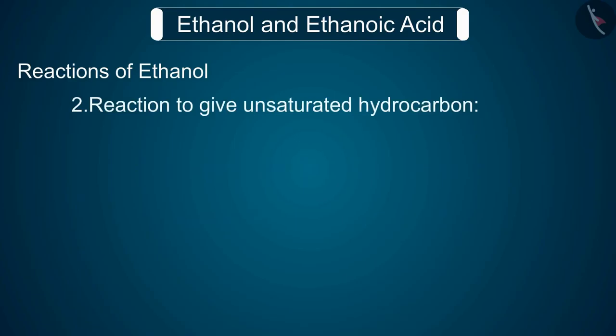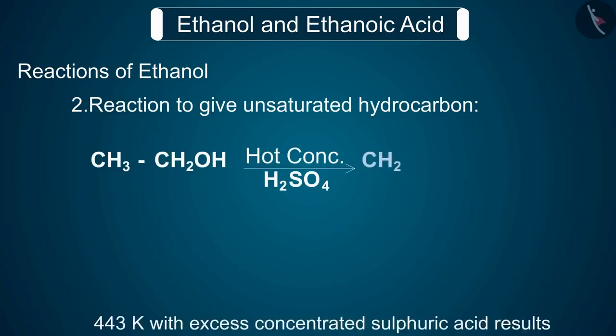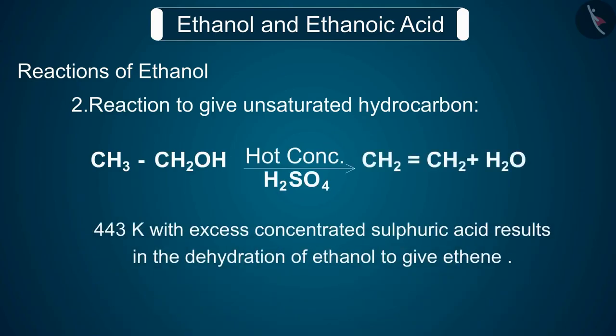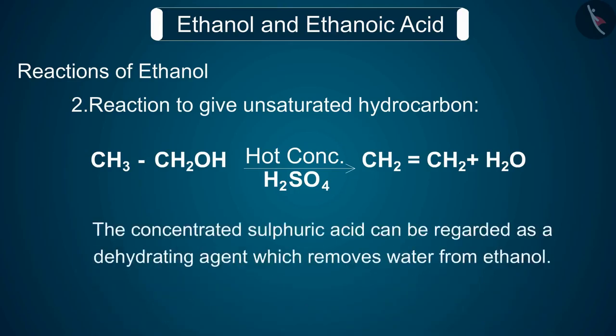Reaction 2: Reaction to give unsaturated hydrocarbon. Heating ethanol at 443 K with excess concentrated sulfuric acid results in the dehydration of ethanol to give ethene. The concentrated sulfuric acid can be regarded as a dehydrating agent which removes water from ethanol.